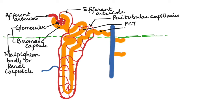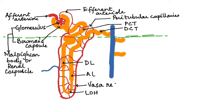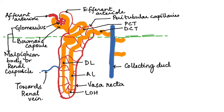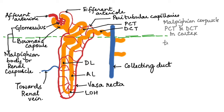Here we can see the proximal convoluted tubule and the distal convoluted tubule, as well as the descending limb, ascending limb, and the loop of Henle. The peritubular capillaries then form a network of capillaries over the tubule called the Vasa recta. These capillaries then join together to form the renal vein. The collecting duct then opens into the duct of Bellini. The Malpighian corpuscle, the proximal convoluted tubule, and the distal convoluted tubule are all located in the cortex region, giving the cortex its dotted appearance.